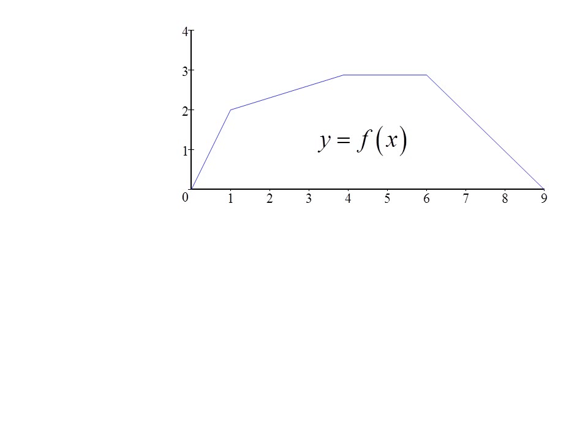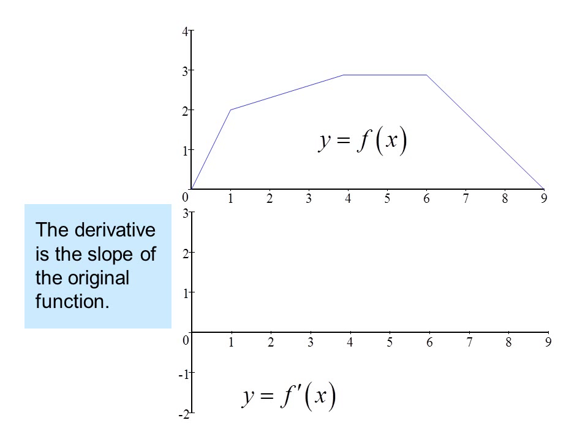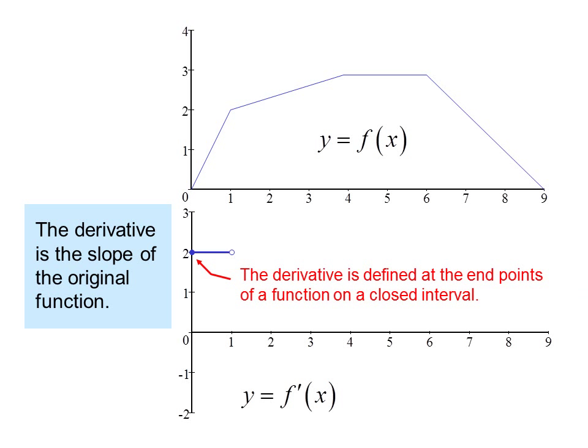Consider this function. The derivative is the slope of the original function, so we could graph the derivative by graphing the slope of the original function. In the interval from 0 to 1, the slope is 2, that is, up 2 over 1, so the derivative is 2. The derivative is defined at the endpoints of a function on a closed interval.